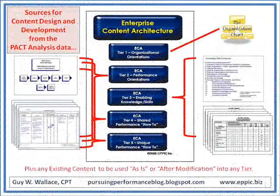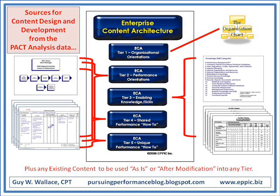The five-tier content architecture enables one to link to the existing organization structure as part of the orientations, then uses performance analysis data unique to each target audience to identify and construct the performance orientations of tier two, and the how-to's of tiers four and five. In tier four, the content is shareable across other target audiences who have the same performance expectations, as well as the unique authentic content required for unique performance.